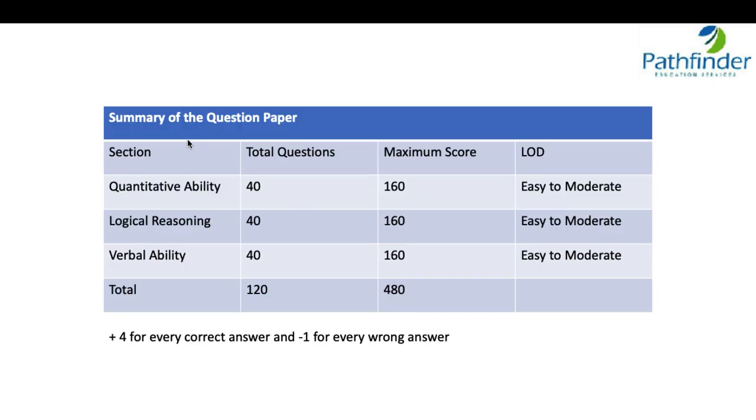As far as the summary analysis is concerned, there was no surprise, three sections: quantitative ability, logical reasoning, verbal ability, each section had 40, 40, 40 for 120 questions. Plus 4 for correct answer minus 1 for wrong answers. Maximum score was 160. All the three sections were mostly easy with a very few minuscule number of questions which were moderate in level of toughness. So I expect a really very high cutoff for the IIM Rohtak IPMAT exam 2022.